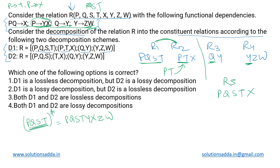Looking at R3 and R4, the common attribute is Y, and Y is the candidate key in R4. So R3 and R4 can also be merged with a lossless decomposition, forming a new relation R6 with attributes Q, Y, Z, and W.